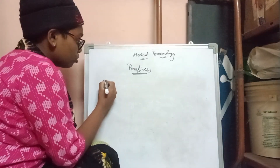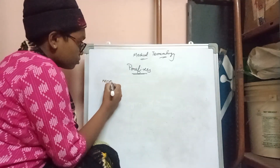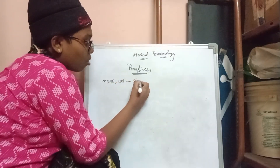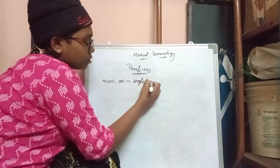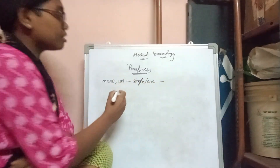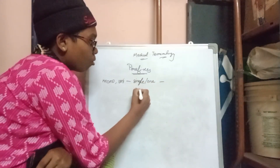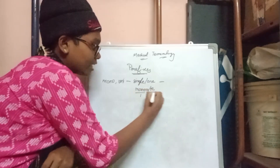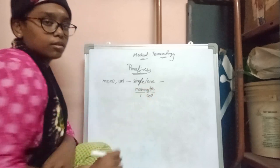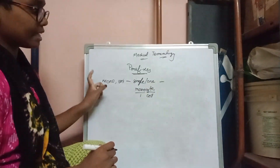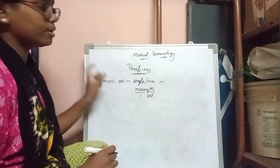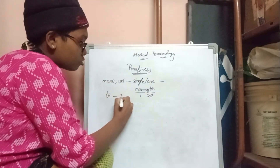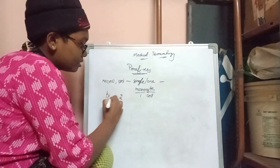The first prefix is 'mono,' also written as 'uni,' which means single or one. For example, 'monocyte' — mono means one, cyte means cell — so monocyte means a single cell. The second prefix is 'bi,' which means two.